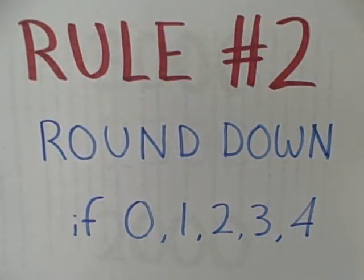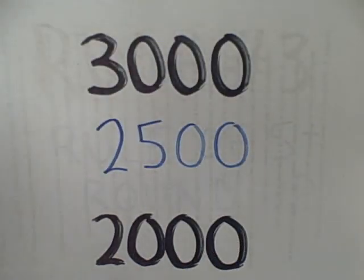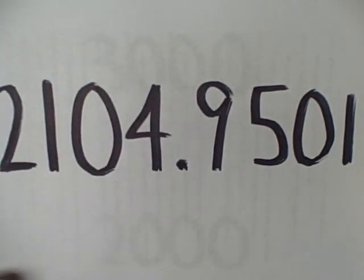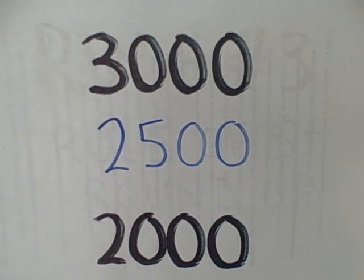Rule two says we should round down when the number to the right is lower than five — when it is a zero, one, two, three, or four. So if we're going to round to the thousands place, we're deciding between two thousand or three thousand. Halfway between the two would be twenty-five hundred, but our original number two thousand one hundred and four is much closer to two thousand than to three thousand, so we round down to two thousand.